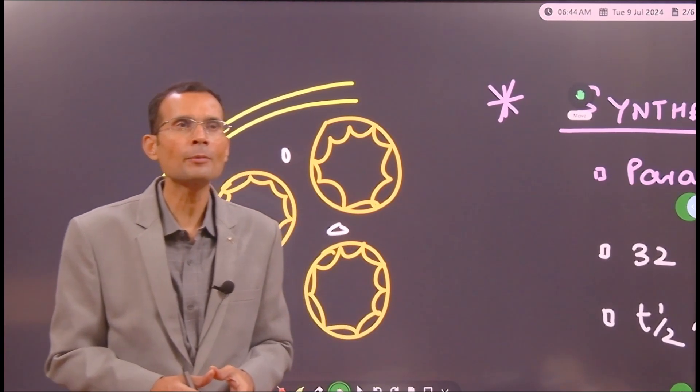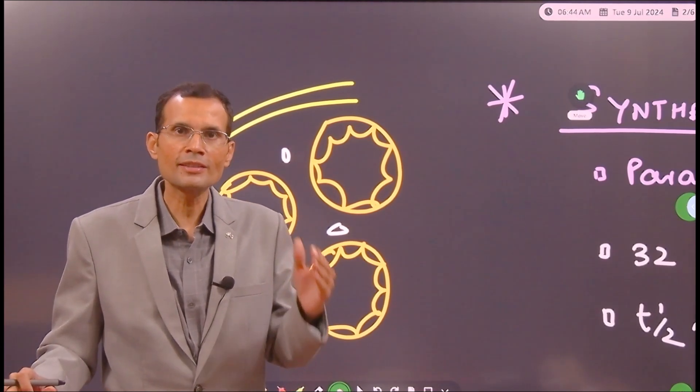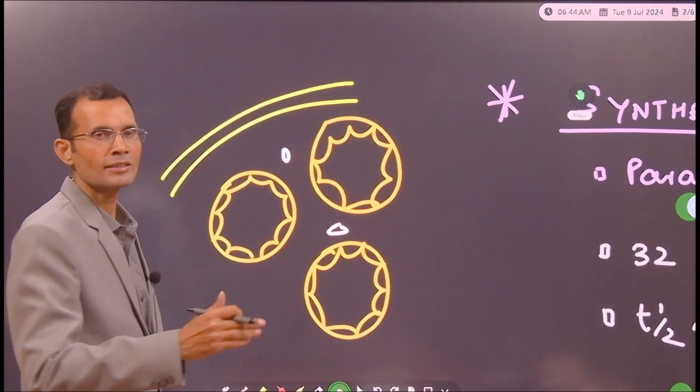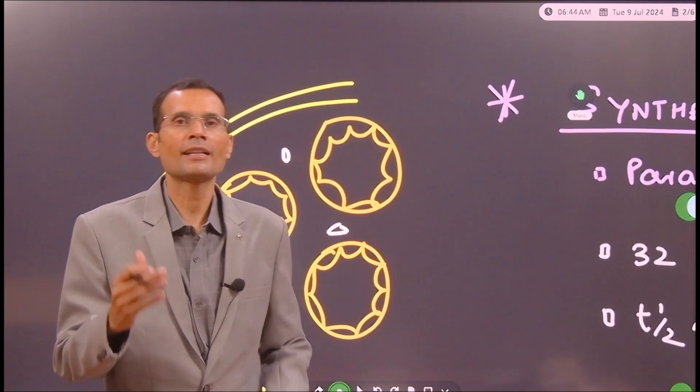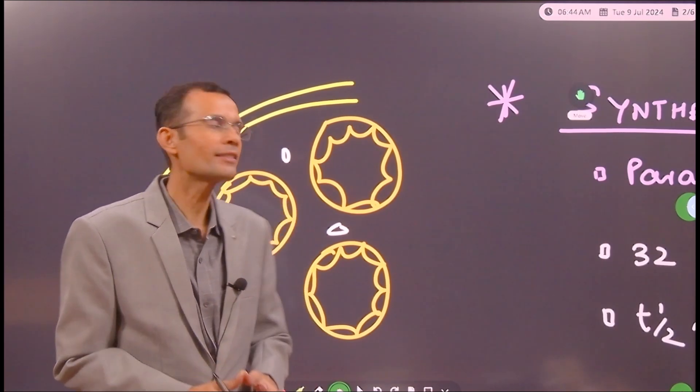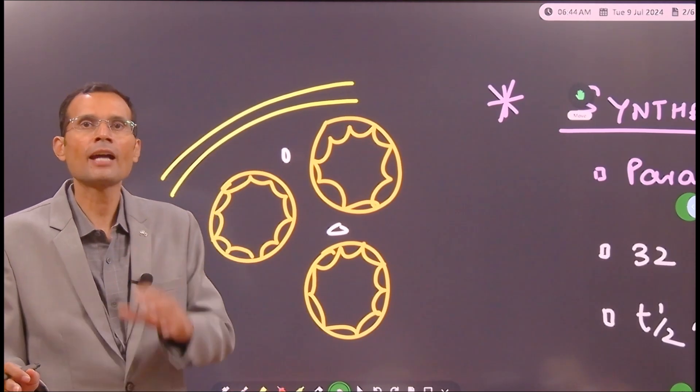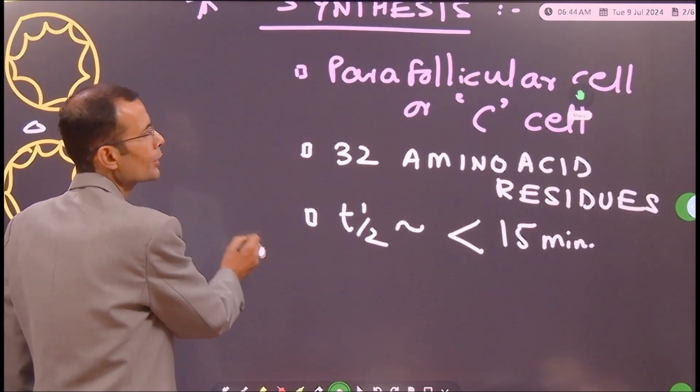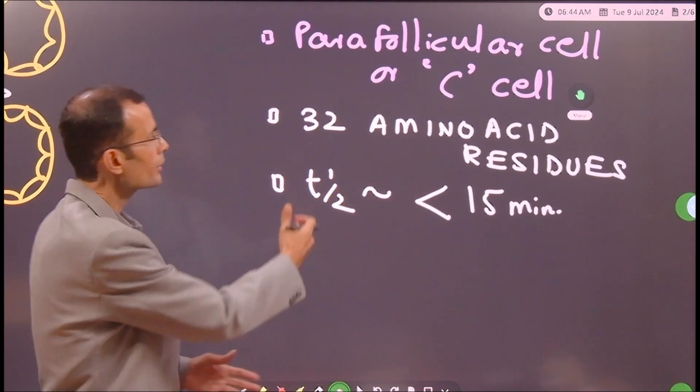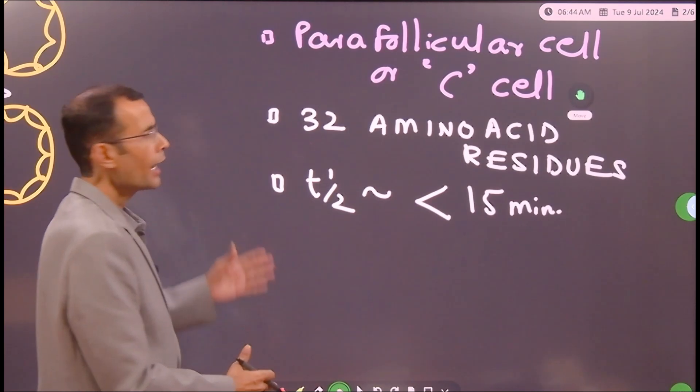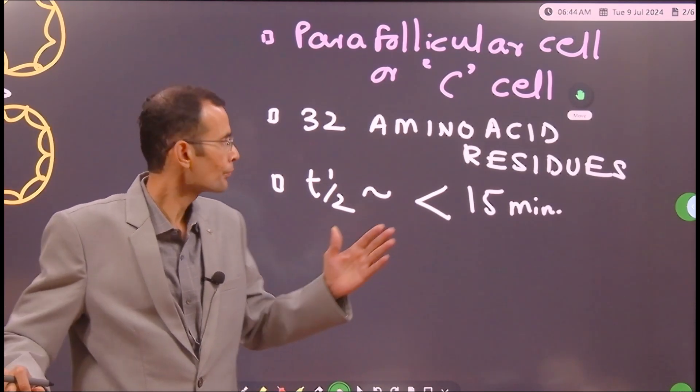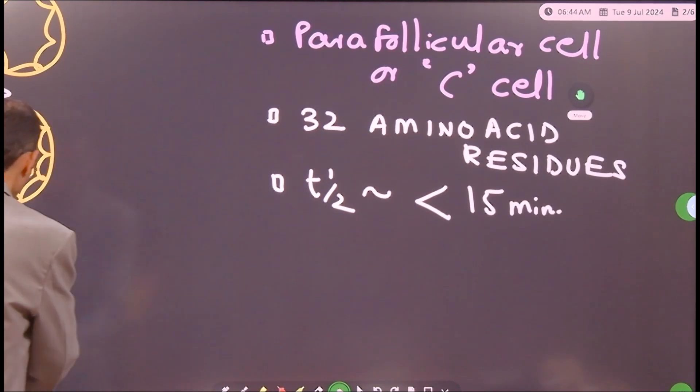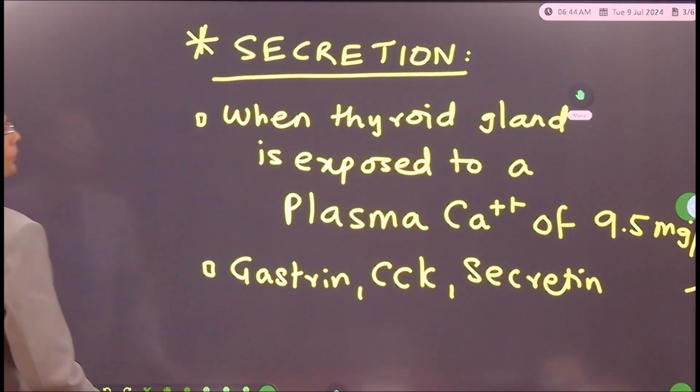Outside these thyroid follicles, there are parafollicular cells, also called C cells. I thought C might be calcitonin, but actually C stands for clear cell. This clear cell or parafollicular C cell synthesizes the calcitonin hormone. Since it's in thyroid gland, it's also called thyrocalcitonin. 32 amino acid residues, and its half-life is less than 15 minutes, in the range of 10 minutes or so.